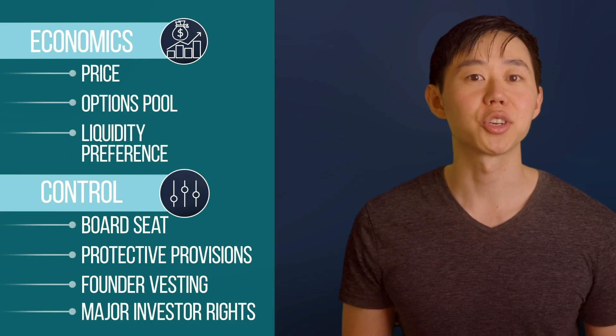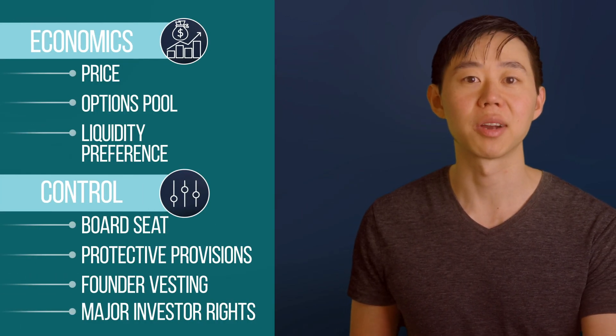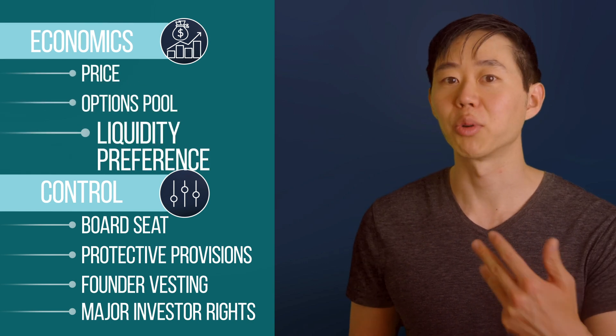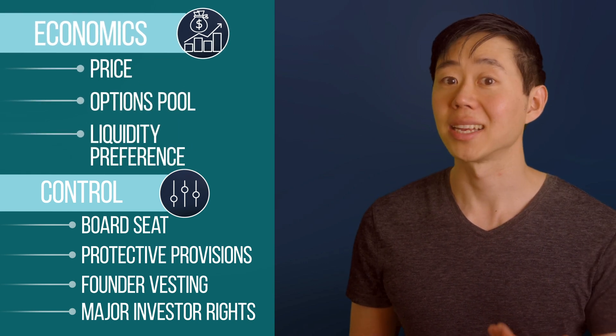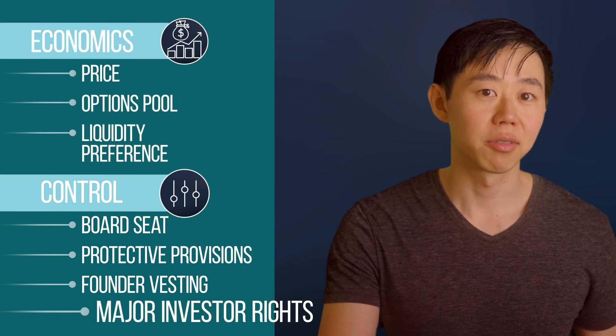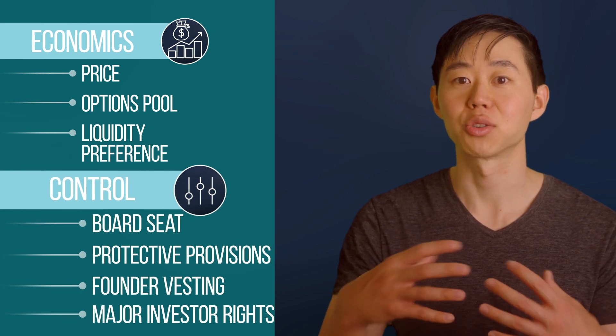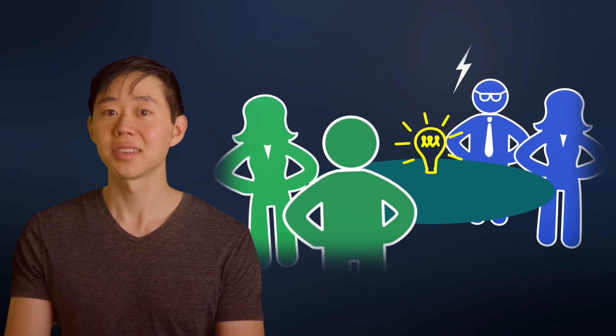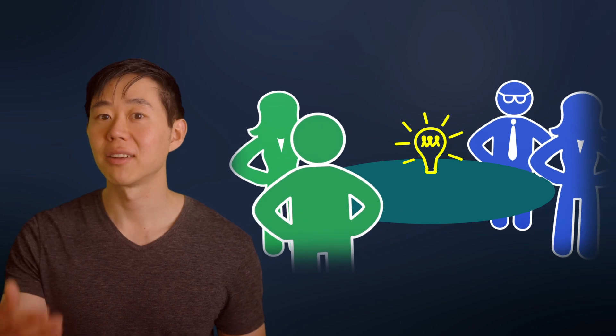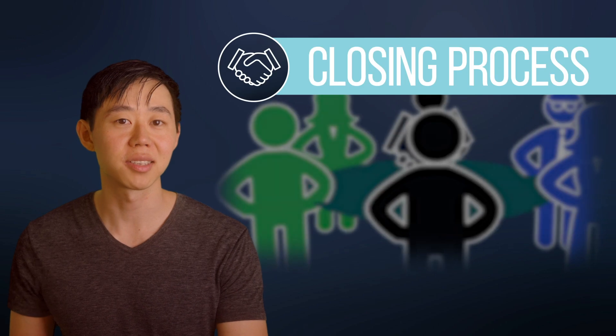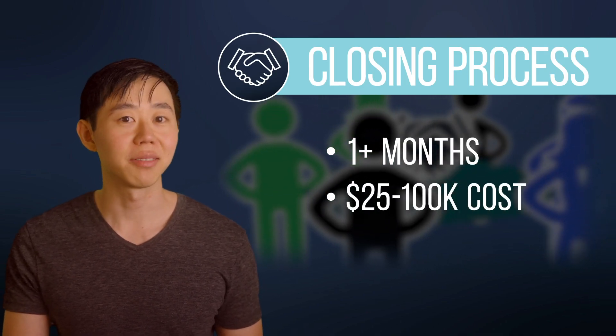To recap, there are seven major terms you need to know for equity priced rounds: price and valuation, options pool, and liquidity preference — all of which affect the economics of a deal — and then major investor rights like prorata rights, board seats, founder vesting, and protective provisions, which constitute the major control terms. Most equity price rounds involve a lot of negotiating on those key terms and require lawyers to finalize in a closing process that can take up to several months and $25,000 to $100,000. In the very early stages of a company, it's often just not worth that headache, which is why many founders opt for a convertible note instead.